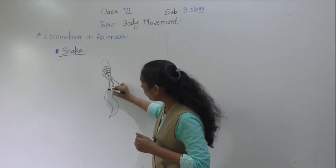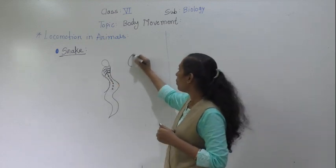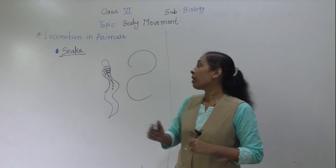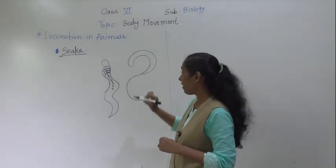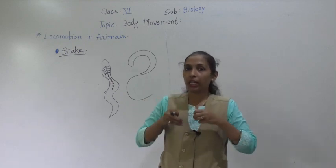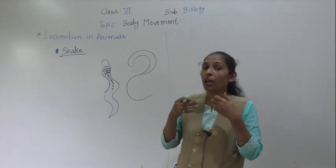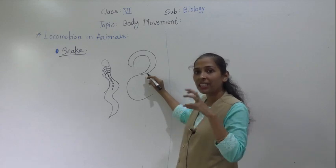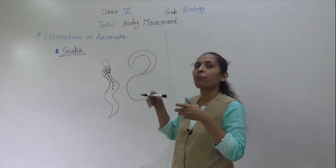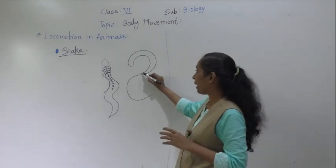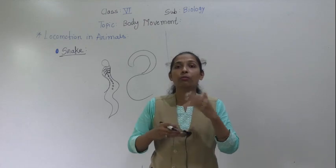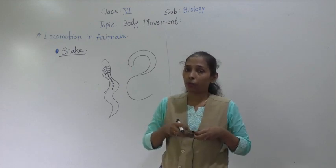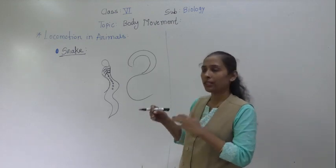While doing locomotion, the snake forms a loop-like structure. This loop-like structure helps the snake to move forward. Whenever the snake forms this loop-like structure, it pushes its body forward by pressing its body on the ground, and the scales on the body of the snake help it to move forward.